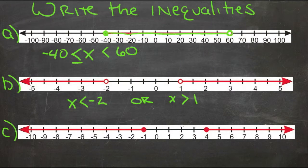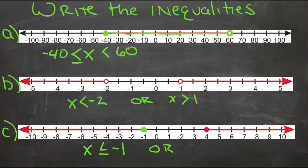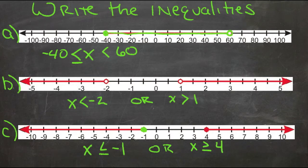We have two possibilities: X is everything to one side or everything to the other. In our last example, X is less than or equal to negative 1 — it can be negative 1 because the circle is filled in — or X needs to be greater than or equal to positive 4. So X is positive 4 or bigger, or negative 1 or smaller.